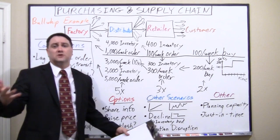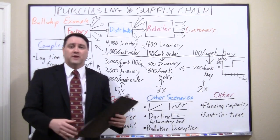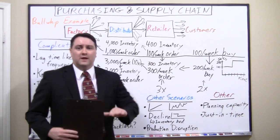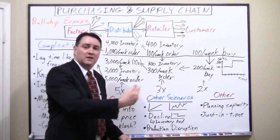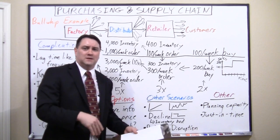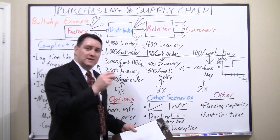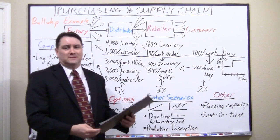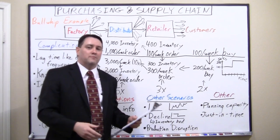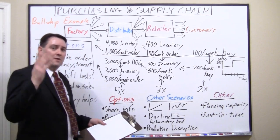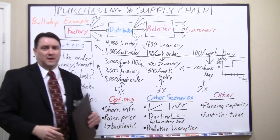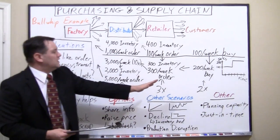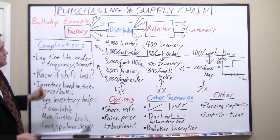It's called the bullwhip effect because of the physical property of a bullwhip: conservation of momentum, which is mass times speed. As your hand moves at the thick end and energy travels down the whip, the mass decreases so speed must increase. The snap at the end of a bullwhip is the very tip moving faster than the speed of sound — that's what you hear when it breaks the sound barrier. Similarly, a change ripples and increases in magnitude as you go further back in the supply chain.